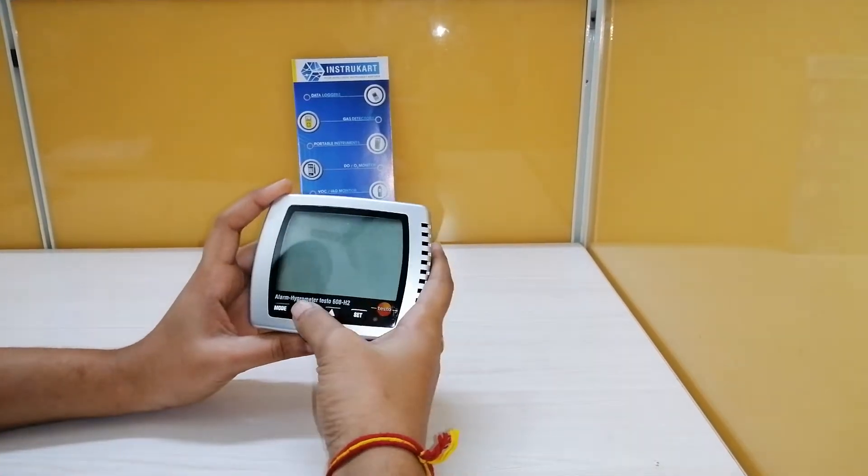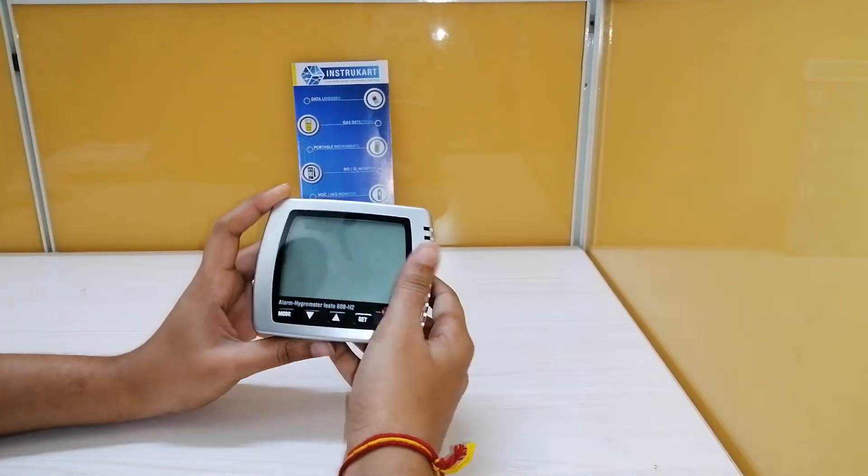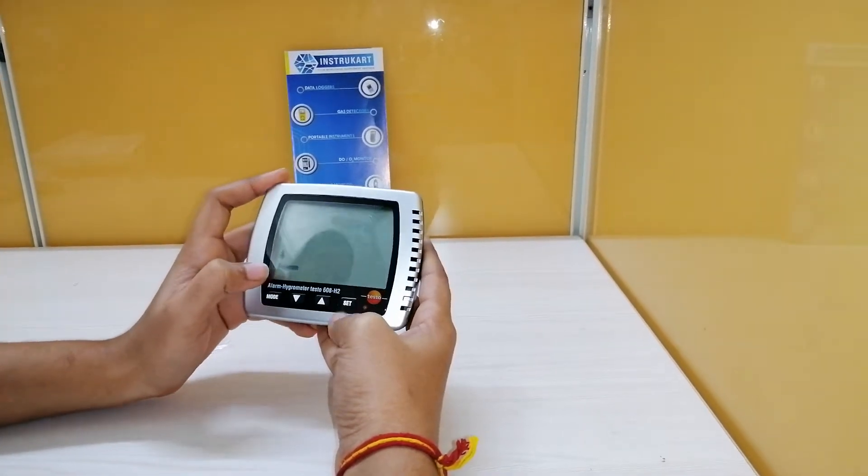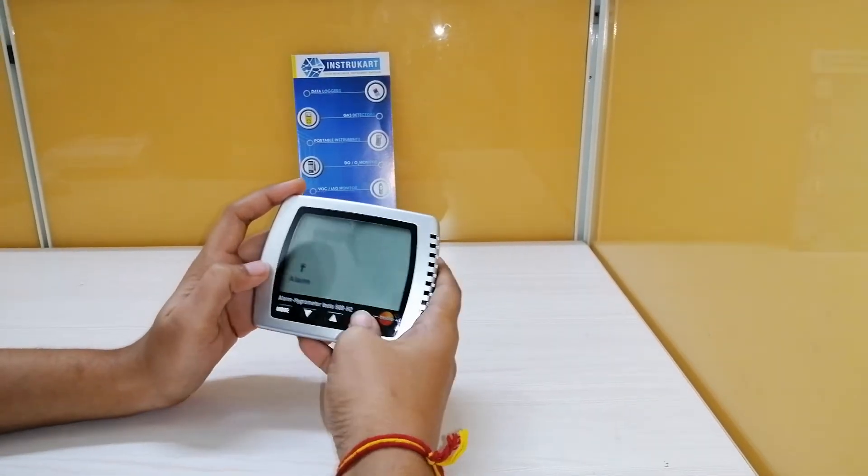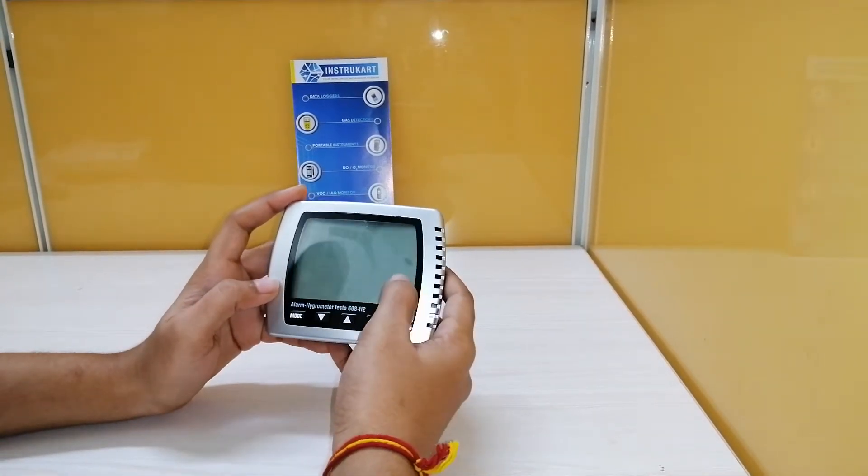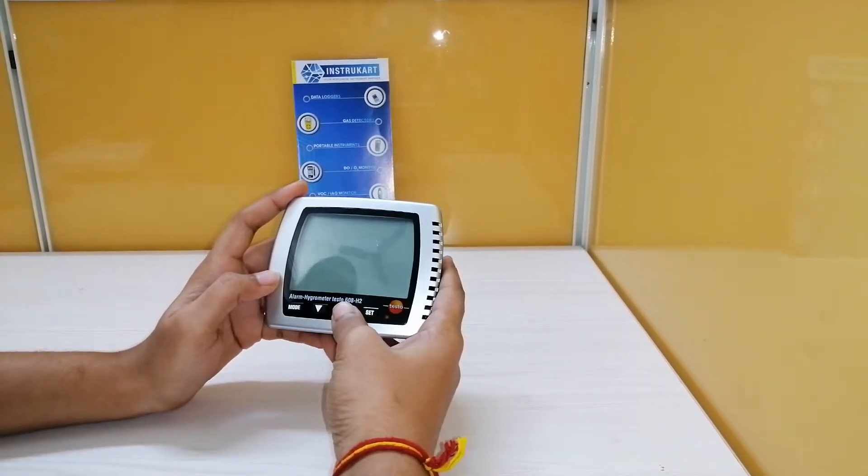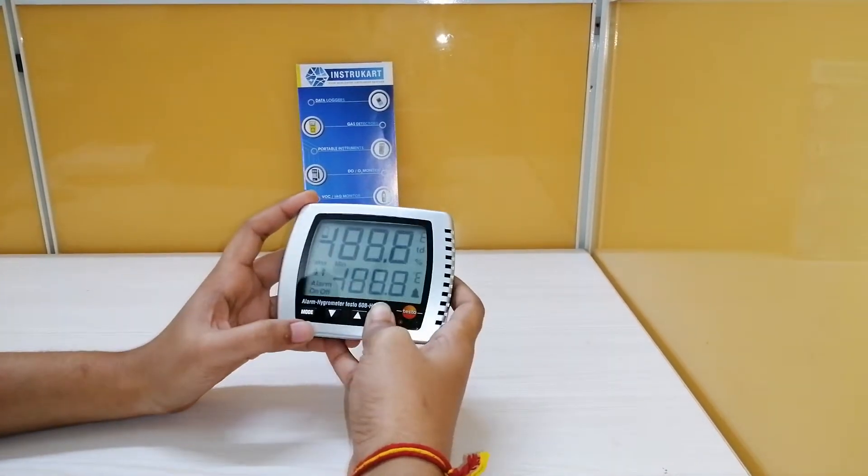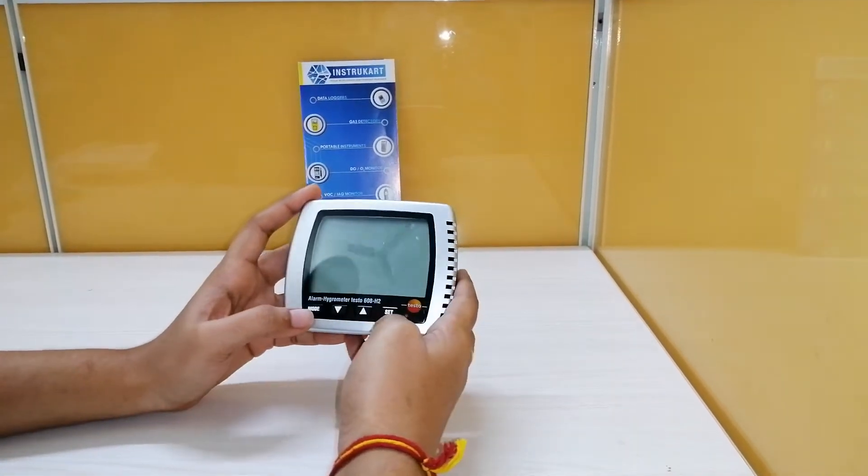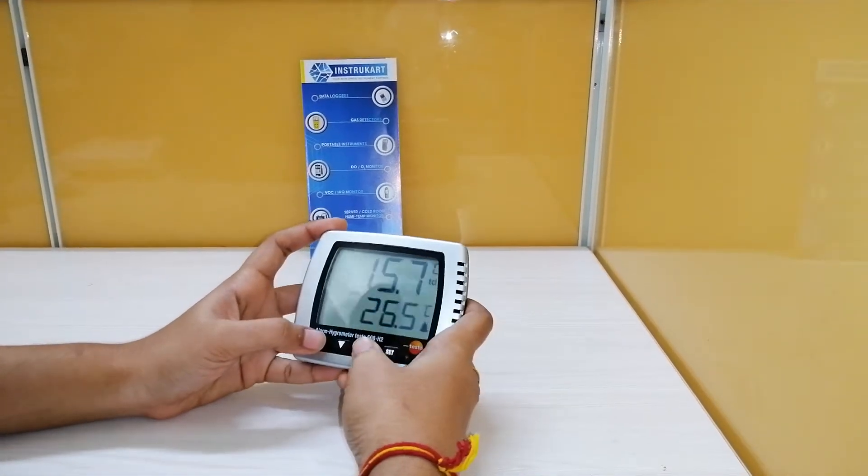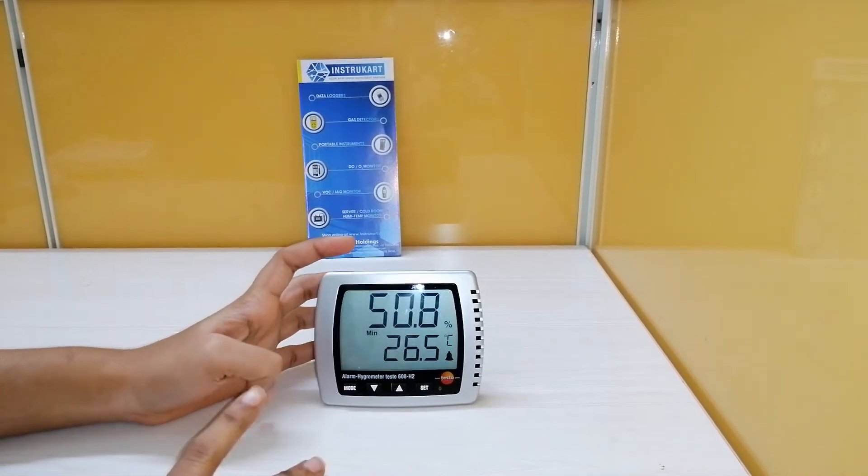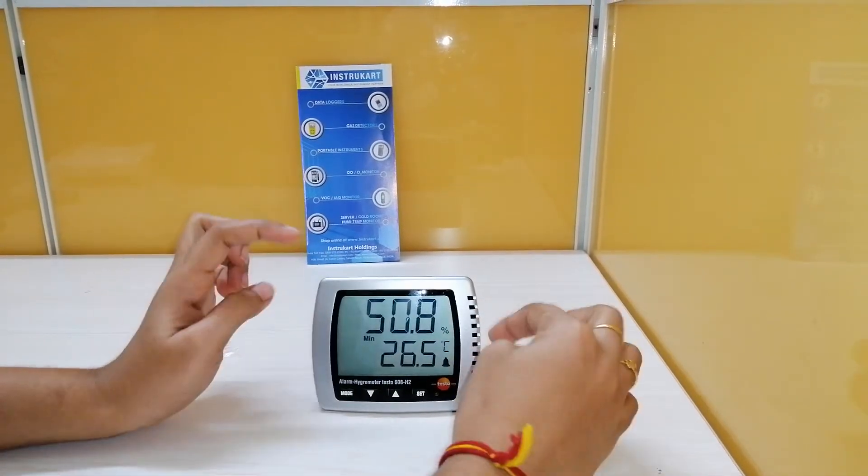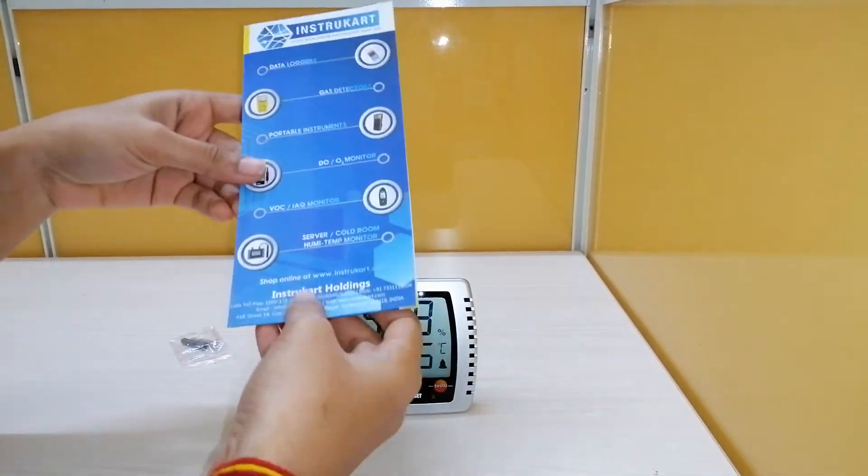Here you can see degrees centigrade, now it is in Fahrenheit, I'm setting it to centigrade. Alarm low point violation on, high point violation, and this is percentage dew point. Here you can show the battery also. This is about Testo 608 H2 thermo hygrometer. For more details about this product and similar products, visit www.instricot.com.